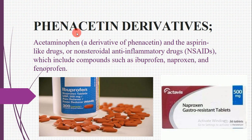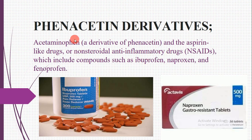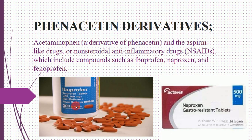Regarding phenacetin derivatives: acetaminophen is a derivative of phenacetin, while aspirin is derived from salicylic acid. Aspirin-like drugs are non-steroidal anti-inflammatory drugs (NSAIDs), which include compounds such as ibuprofen, naproxen, and fenoprofen. Shown here are ibuprofen tablets USP 200 mg (pain reliever/fever reducer, 300 caplets) and naproxen gastro-resistant tablets.